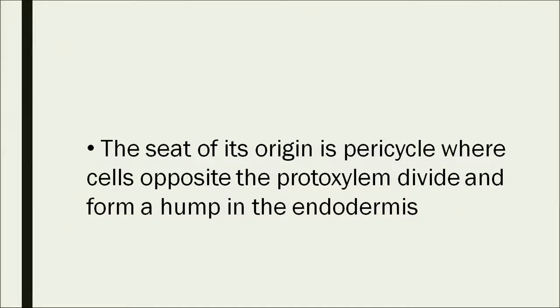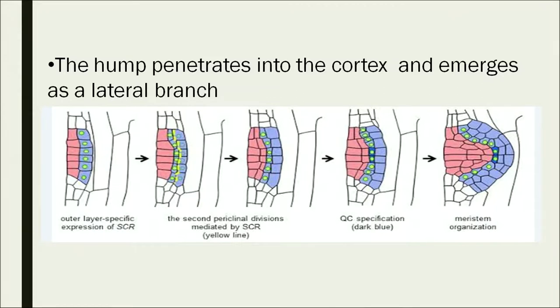The origin of lateral roots is endogenous — from deeper layers — and the seat of origin is the pericycle. Cells opposite the protoxylem divide and form a hump in the endodermis. In the figure, two layers are shown in different colors: they start dividing, and in figure 3, four layers have formed. Slowly a hump appears, the meristem gets organized, and a lateral root starts developing from the deeper layer, penetrating into the cortex and emerging as a lateral branch of the root.